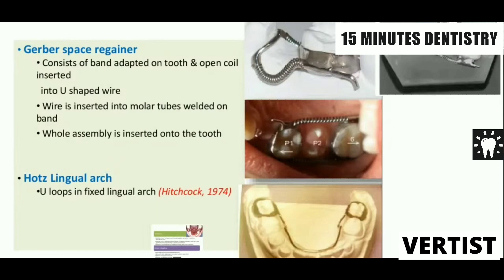Here is an example of Gerber's space regainer. Another simple mechanism for regaining space is a modification of the lingual arch where U-shaped loops are incorporated. While placing the lingual arch, the loops are activated and then the lingual arch is cemented. This leads to the distal movement of the molars.